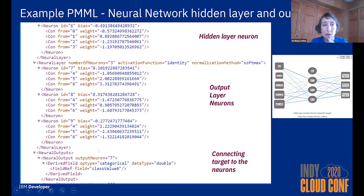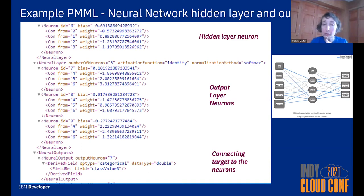The neural layer for the output layer has connections, and then the NeuralOutputs element connects the target values to those elements in the output layer.